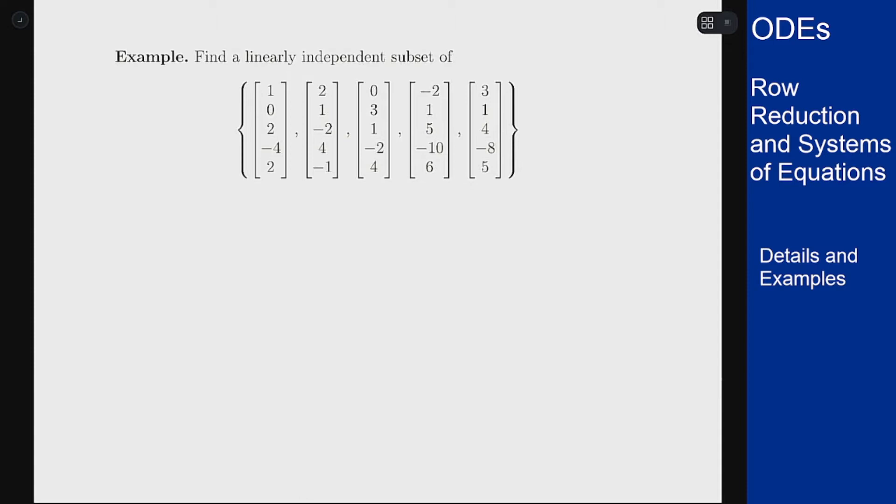So we want to build the matrix A with these vectors as columns and then row reduce. Let's build that matrix and go from there.